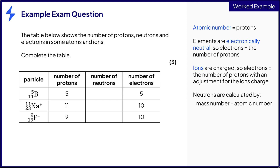To calculate the number of neutrons, you subtract the atomic number from the mass number. For boron, eleven minus five equals six neutrons. We've now scored one mark for the correct number of protons, neutrons, and electrons in boron. For the sodium ion, twenty-three minus eleven equals twelve neutrons. We've now scored the second mark.